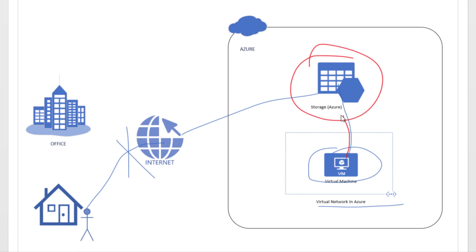Now let's say a developer comes and says that he has to travel and is not able to connect to the virtual machine for some reason. He needs to connect temporarily to this particular storage account to upload some critical data for the application and then log off. So you have a second option: configuring the firewall to allow only one particular IP address or a range of IP addresses.